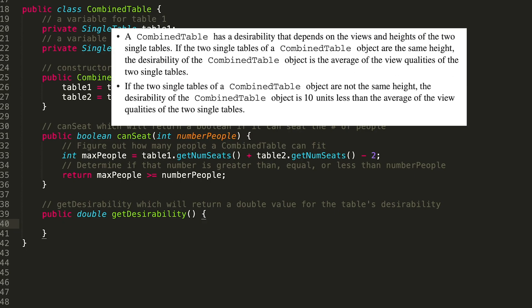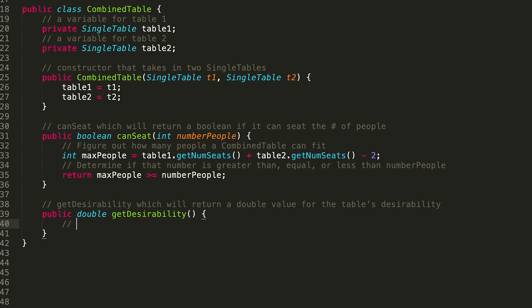A combined table's desirability depends on the views and heights of the two single tables. If the two tables are the same height, desirability is the average of the view qualities of both tables. If they're not the same height, the desirability is 10 units less than that average. In both cases we'll need the average view quality, so let's compute that first.